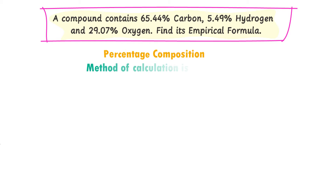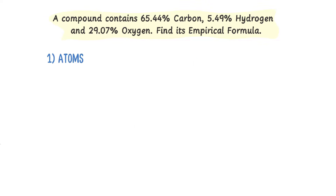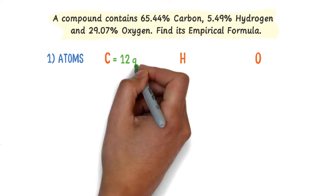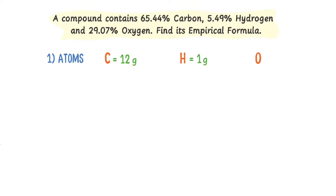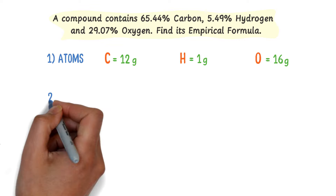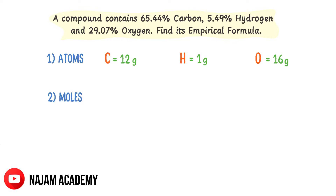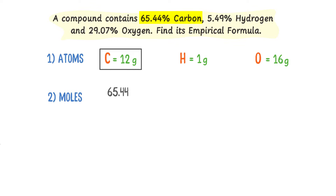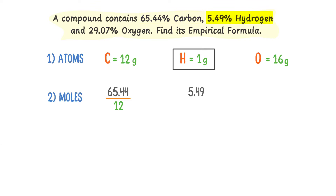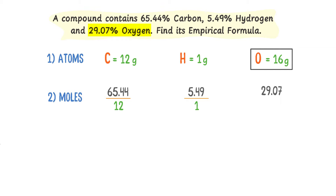Remember that the method of calculating empirical formula from mass composition or percentage composition is the same. Firstly, I highlight the given atoms: carbon, hydrogen, and oxygen. The relative atomic mass of carbon is 12, hydrogen is 1, and oxygen is 16. Secondly, I calculate the number of moles. The given percentage of carbon is 65.44, divided by its relative atomic mass of 12. The given percentage of hydrogen is 5.49, divided by its relative atomic mass of 1. The given percentage of oxygen is 29.07, divided by its relative atomic mass of 16.